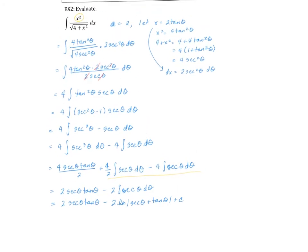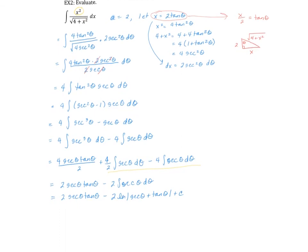Going back to my original substitution, which was x is equal to two tangent of theta, that means x over two is equal to tangent of theta. If we drop a right triangle where theta corresponds to tangent being opposite over adjacent, our hypotenuse ends up being the square root of four plus x squared. Now I can use that relationship to go back to my integral and replace my thetas.